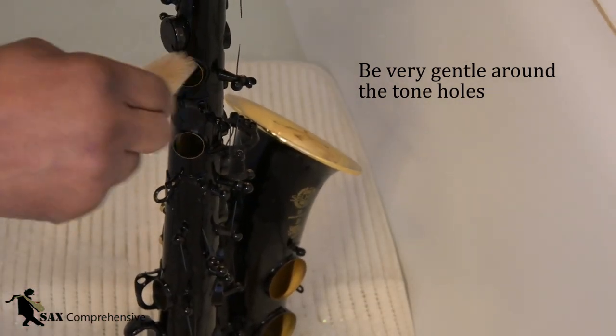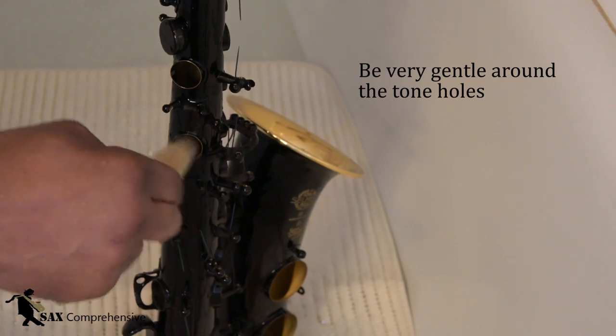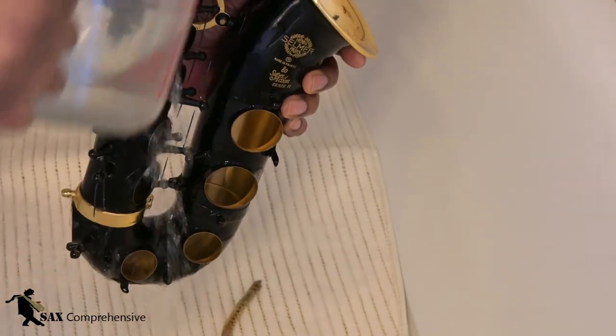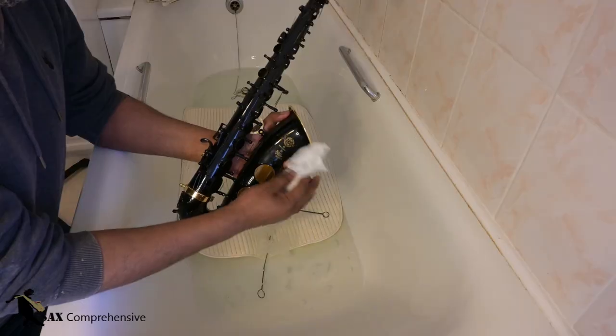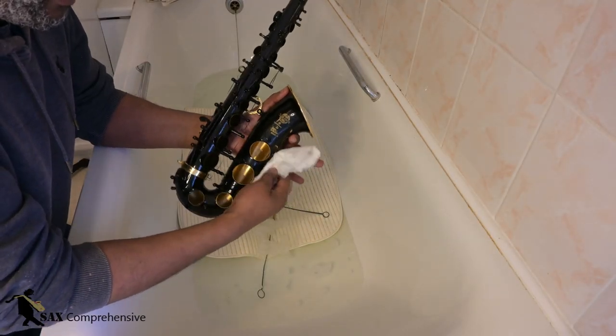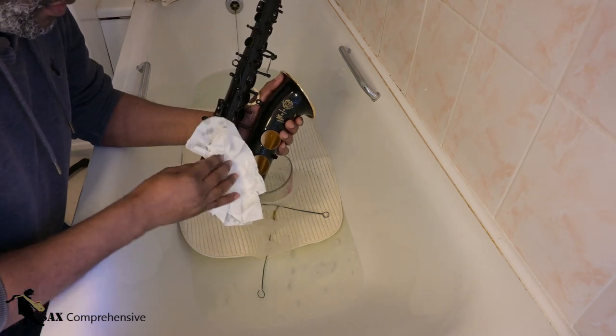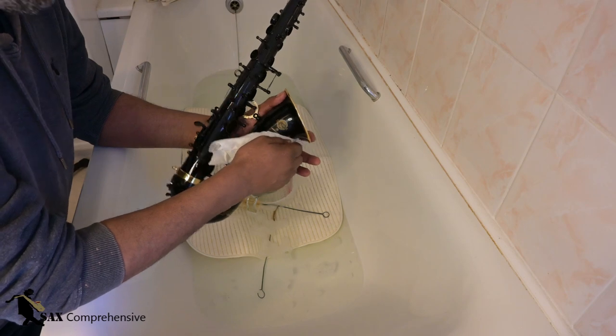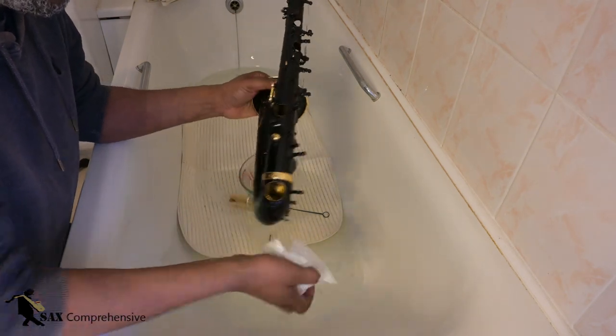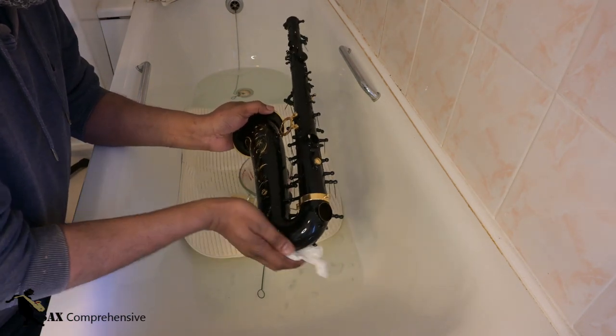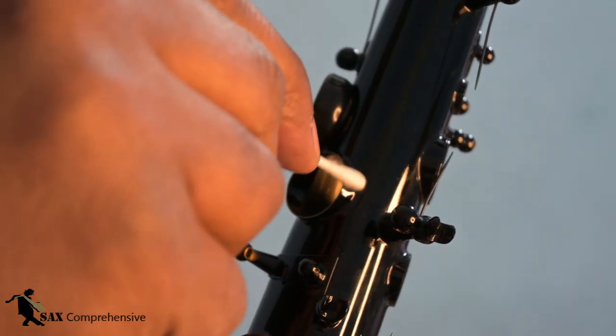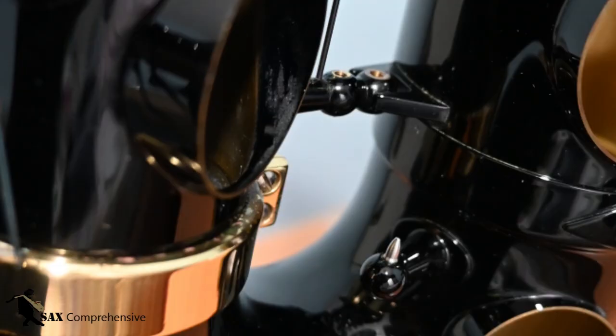The tone holes can then be washed. Once cleaned the saxophone will need to be dried with a paper towel being careful of the springs. The tone holes can be further cleaned with Q-tips and naphtha, especially inside the tone holes. On my saxophone there was still some stubborn grime on the inside of the tone holes. Make sure that the saxophone is thoroughly dried and it can be left to further air dry.